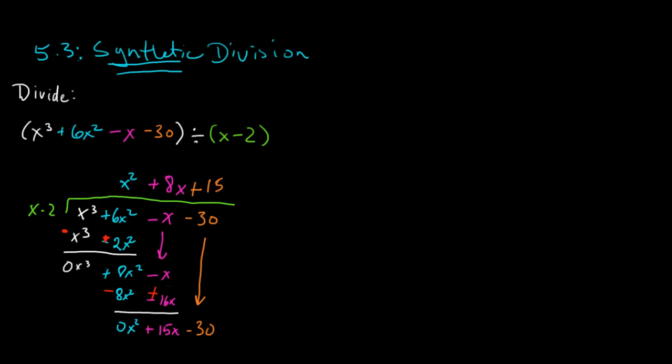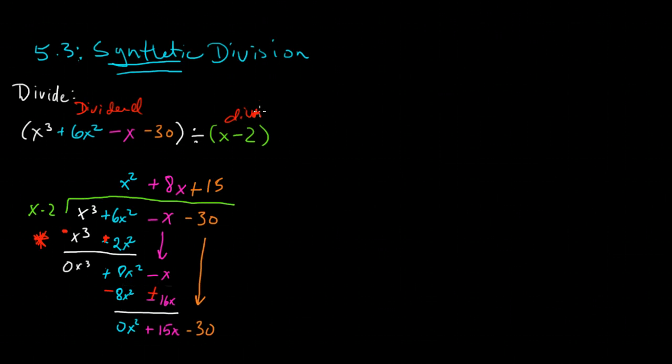Now remember, the key step here is this step where we are adding the opposite. We are subtracting. So what we'll do is we'll build that in. Let's take a look at our divisor. Remember, this is called the dividend, and this is called the divisor. And we'll take a look at our divisor, and we'll look for the term, the constant term there, which in this case is a negative 2.